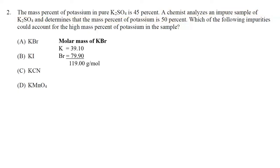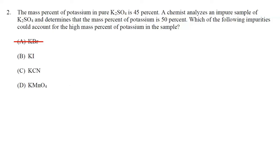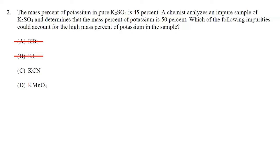Starting with potassium bromide: using the periodic table, the molar mass is about 119, so 39.10 divided by 119 times 100 gives 33% — not higher than 45%, so choice A is eliminated. Moving on to potassium iodide, that molar mass is even heavier, so the percentage of potassium is even smaller: 39.1 divided by 166 gives only 24% potassium by mass. Choices A and B are eliminated.